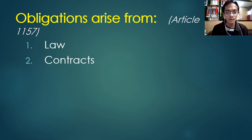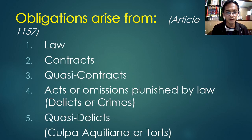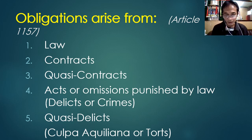So one, two, three, four, five — these are the sources of obligations. But for purposes of the board exam, if you are asked what the sources of obligations are, you enumerate all five: one, two, three, four, five.